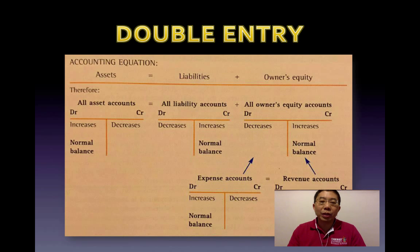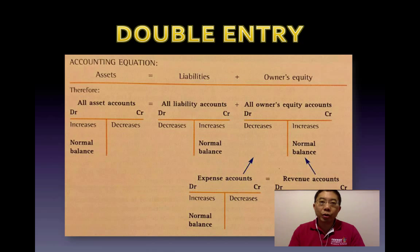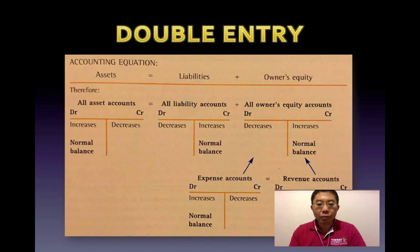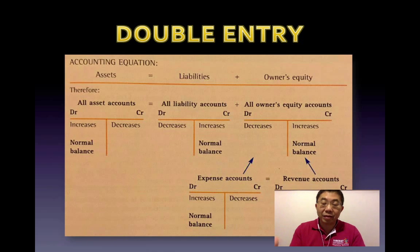Remember we said that accounting is a process — it's a series of tasks, not just one step. It's a process by which we record, classify, and summarize business transactions so that we are able to provide reports that contain information useful to users to make informed economic decisions. How we systematically record these transactions is by using the concept of the accounting equation.